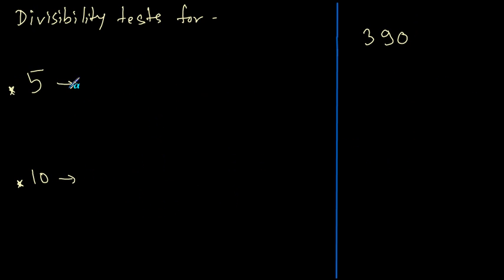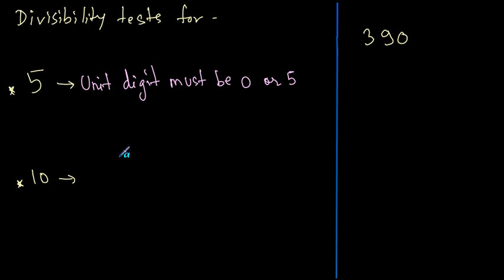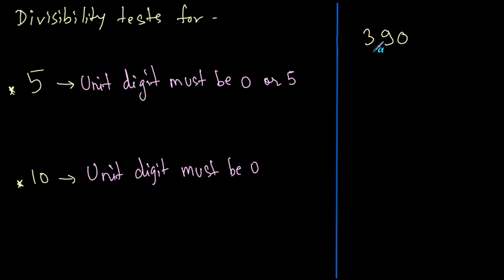The divisibility test for 5 says that the unit's digit should be either 0 or 5. And for 10, the unit's digit should be 0. Looking at this number, the unit's digit is 0, which satisfies both conditions. So it is divisible by both 5 and 10.